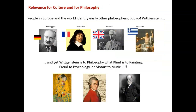We think that this exhibition is important for the relevance of culture and for philosophy. People in Europe and in the world easily identify other philosophers with their home countries — like Heidegger to Germany, Descartes to France, or Socrates to Greece — but this is not yet the case with Wittgenstein. And yet we think that Wittgenstein is to philosophy what Klimt is to painting in Austria, Freud to psychology, or even Mozart to music.